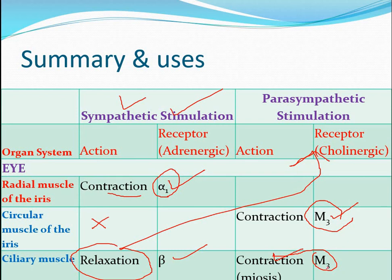The ciliary muscle fiber is supplied with both beta receptors and M3 receptors. A question may be set: which structure is supplied with both sympathetic and parasympathetic divisions? The answer is the ciliary muscle — supplied sympathetically through beta-1 receptors and parasympathetically through M3 receptors. Radial muscle fibers have only sympathetic innervation. I hope this concept is understood for ophthalmological examination and assessment. Thank you.